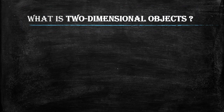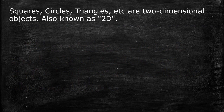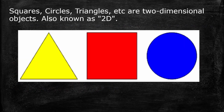Students, do you know what 2-Dimensional Objects are? Objects which have only length and breadth but no thickness, or negligible thickness, can be called 2-Dimensional Objects. Square, Circle, Triangles etc. are 2-Dimensional Objects.